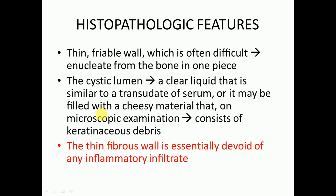Histopathologically, OKC has a thin, friable wall that is often difficult to remove from bone in one piece, and remnants may remain, leading to recurrence. The cystic lumen contains a clear liquid similar to a transudate of serum, or it may be filled with a cheesy material consisting of keratinaceous debris on microscopic examination. The thin fibrous wall is essentially devoid of any inflammatory infiltrate.